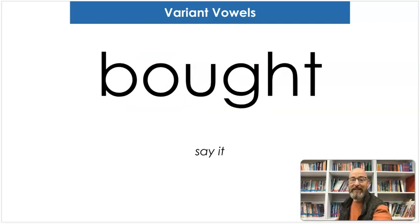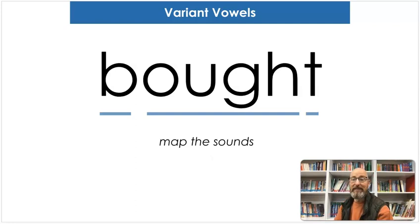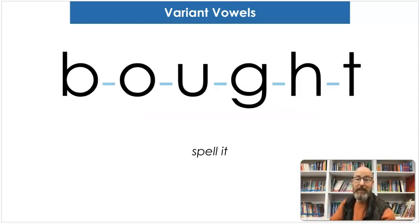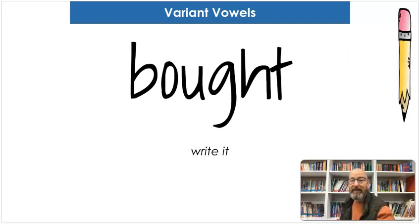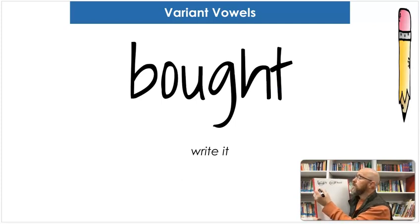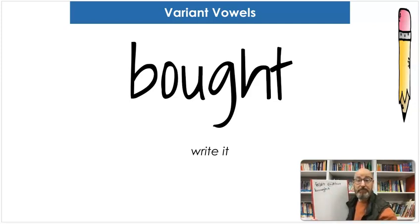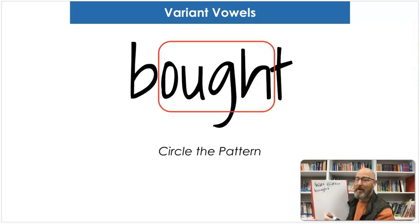Our next word is bought. Say bolt. Map the sounds: B-A-U-L-T. Bolt. Spell it: B-O-U-G-H-T. Bolt. And let's write it: B-O-U-G-H-T. What makes the "aw" sound? O-U-G-H. That's correct. Let's circle it.